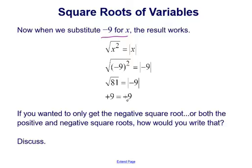If you wanted to only get the negative square root or both the positive and negative square roots, how would you write that? In this case you're getting the positive square roots. What if you wanted the negative or both — what could we use?